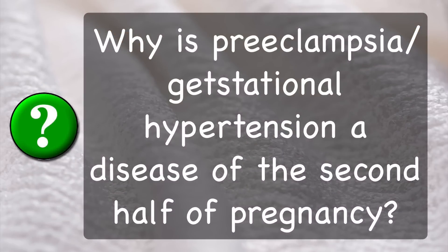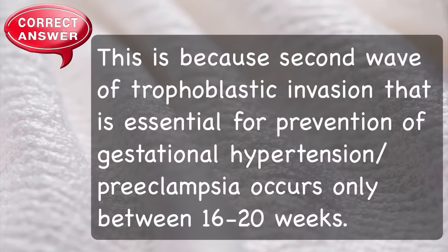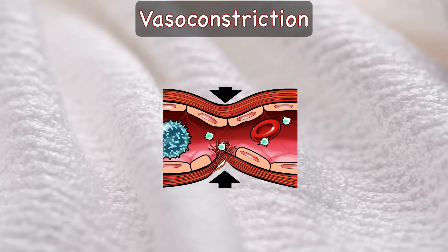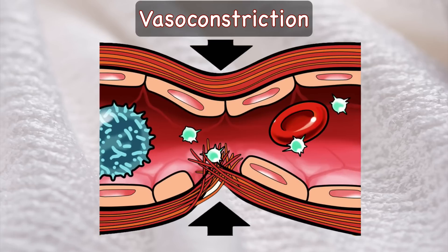Why is pre-eclampsia a disease of the second half of pregnancy? It is because the second wave of trophoblastic invasion, essential for prevention of pre-eclampsia, occurs only between 16 to 20 weeks. The basic pathology in gestational hypertension or pre-eclampsia is vasoconstriction of arterioles throughout the maternal body. Vascular changes and local hypoxia of the surrounding tissues lead to hemorrhage, necrosis, and pathological changes in organ systems including the central nervous system, hematological system, hepatic, renal, and cardiovascular systems.